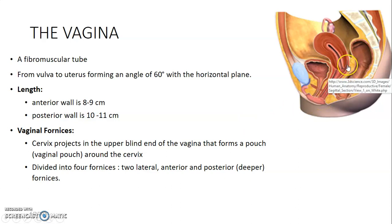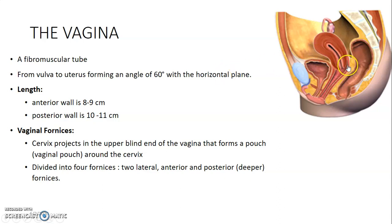Vaginal fornices: the cervix projects into the upper blind end of the vagina, forming a pouch around the cervix. These are divided into four fornices: two lateral, one anterior, and one posterior which is deeper.